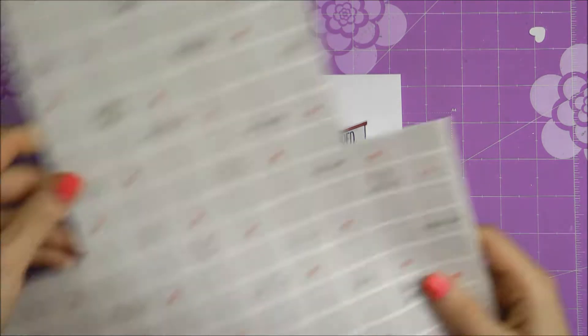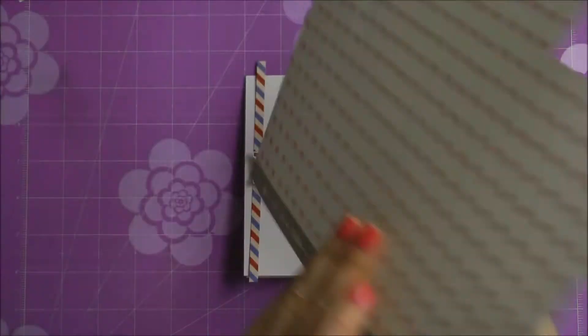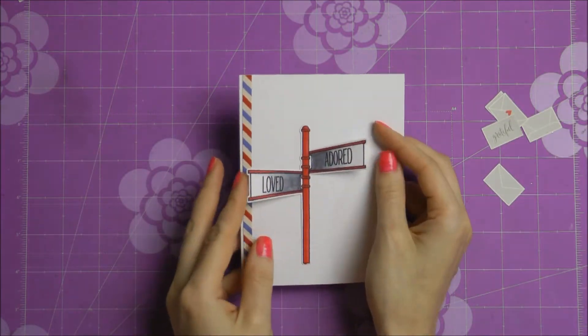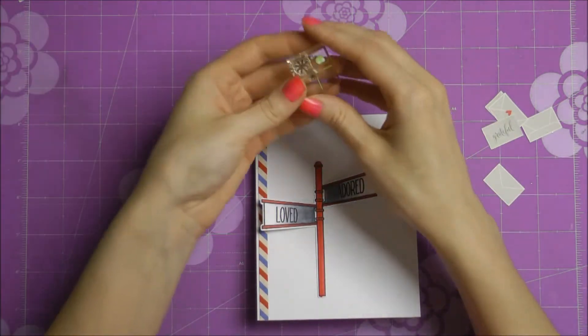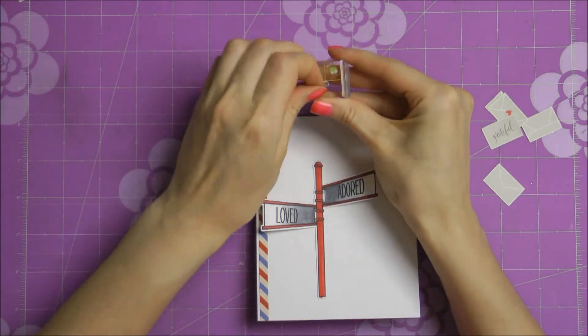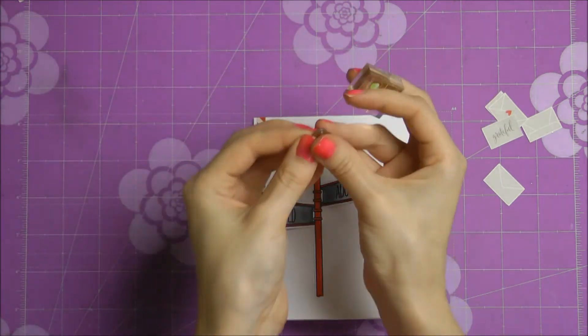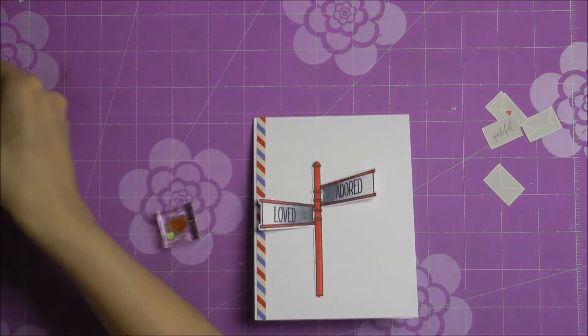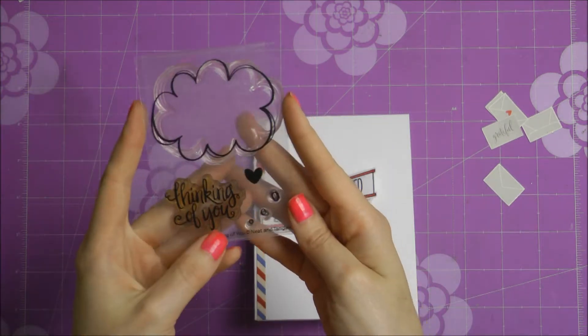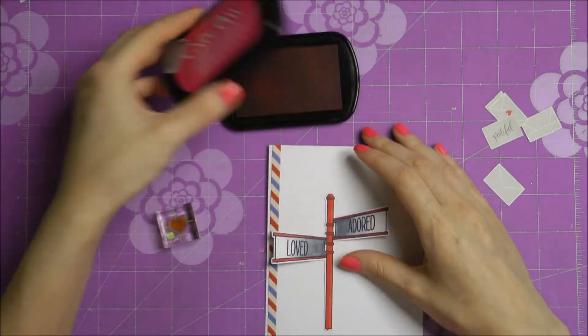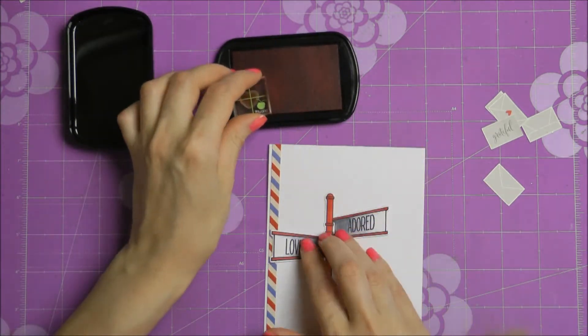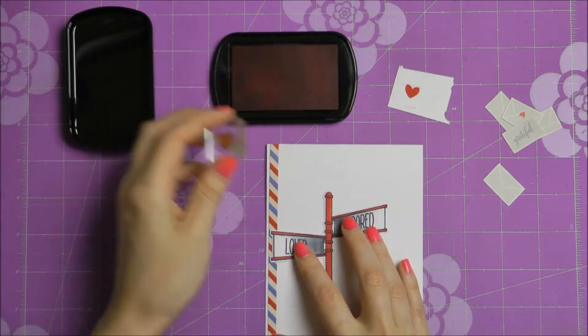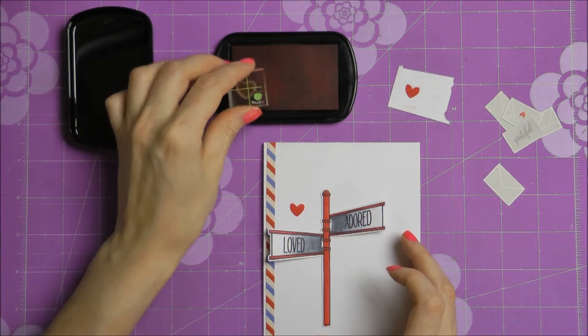I didn't show you how I colored my stamped and die cut image because I'm not really a pro when it comes to Copic markers. I know a few basic rules and I stick to them. So that's why I didn't want to show you anything. There are lots of different tutorials online on how to use Copic markers. So if you're looking for information about that you can just search for those on YouTube. So I used basically a few grays and then a red Copic marker and some colorless blender as well just to blend my colors.